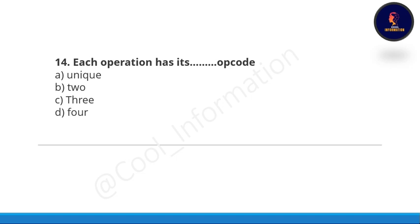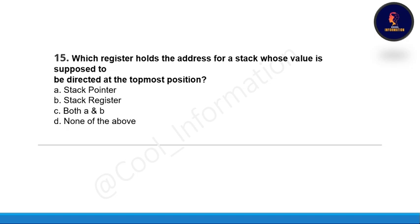Question number fourteen: each operation has its — unique code, two code, three code, or four code. The correct option is option A, which is unique code. That means each operation has its unique op-code.